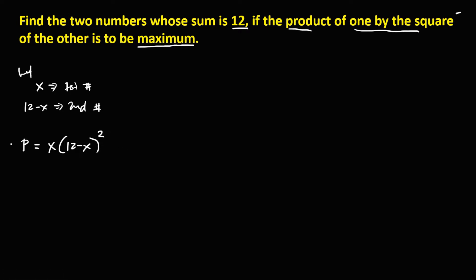We need to simplify this. So P is equal to x times the expansion of (12 minus x) squared. We're going to use the DSMS method. The first S is the square of the first term — the square of 12 — that's 144.